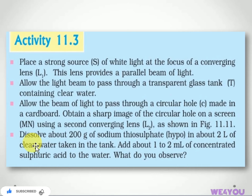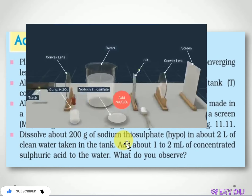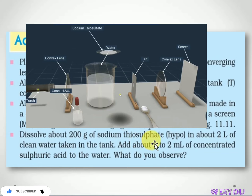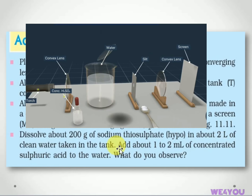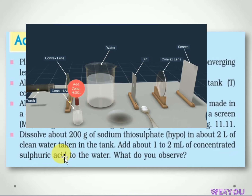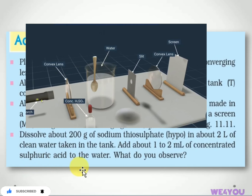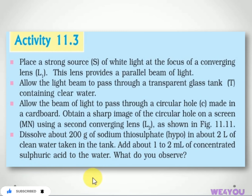Dissolve about 200 grams of sodium thiosulfate in two liters of clean water taken in the tank. Then add about 1 to 2 ml of concentrated sulfuric acid to the water. What do you observe now?